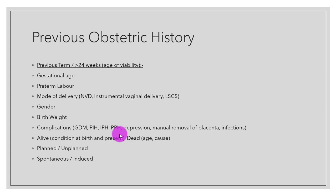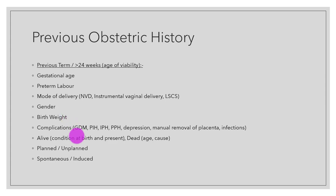Then we ask about previous obstetric history. Firstly, for children born at term or after 24 weeks — the age of viability — we will ask about gestational age, whether she had preterm labor, the mode of delivery for each child — normal vaginal delivery, instrumental delivery, or lower segment caesarean section — gender, birth weight, and complications such as gestational diabetes mellitus, pregnancy-induced hypertension, intrapartum hemorrhage, postpartum hemorrhage, depression, manual removal of placenta, and infections. We also ask whether her children are alive or deceased.